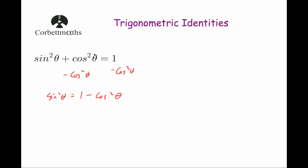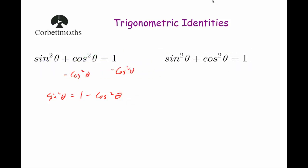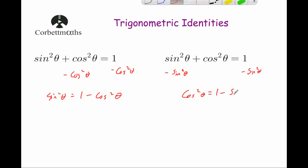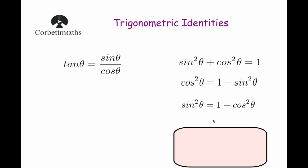We could also rearrange by making cos squared the subject: subtracting sin²θ from both sides gives cos²θ = 1 − sin²θ. These rearrangements are very useful. So our two trig identities are: tan θ = sin θ / cos θ, and sin²θ + cos²θ = 1, with the useful forms cos²θ = 1 − sin²θ and sin²θ = 1 − cos²θ.